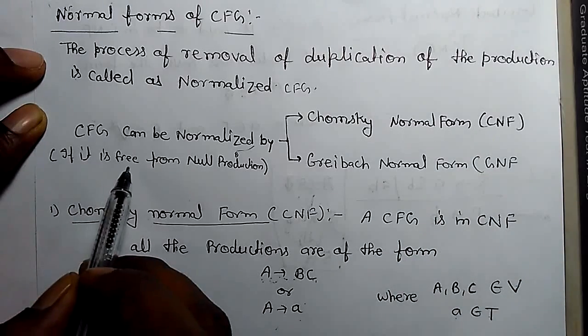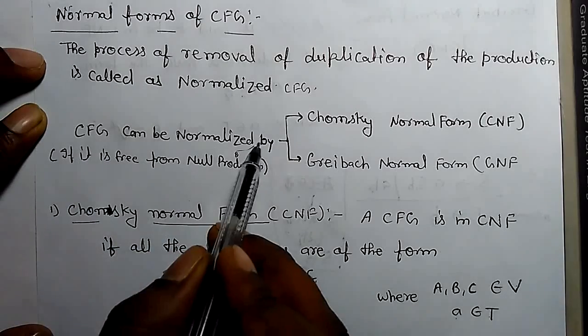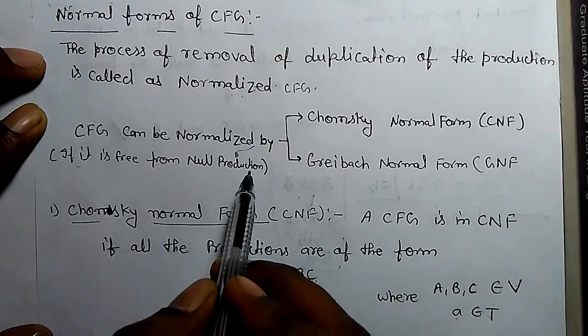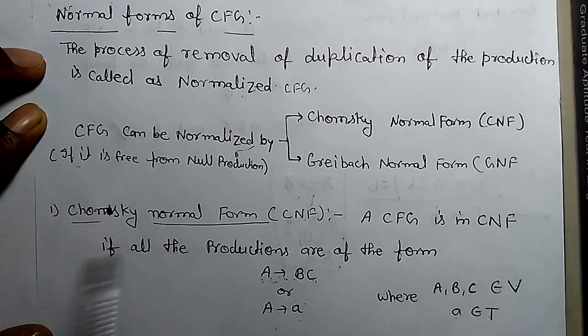A CFG can be normalized if it is free from null production. There should not be any null production.